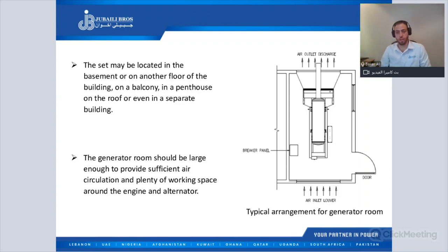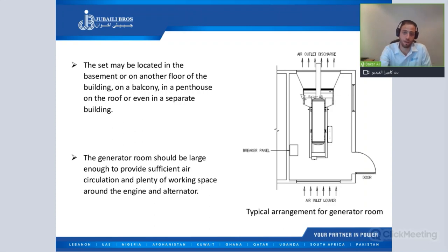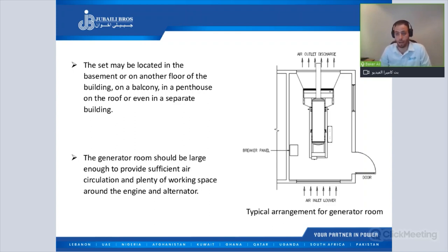When installing the generator in a room, care must be taken to keep easy access to provide proper access for maintenance and general repairs. We have to keep enough space around the generator for easy access for maintenance and repair. We must have easy access to perform generator general services like changing oil and filters, filling oil, filling coolant, and removing and installing the main components of the engine and alternator, like cylinder heads, starter motor, and DC alternator.